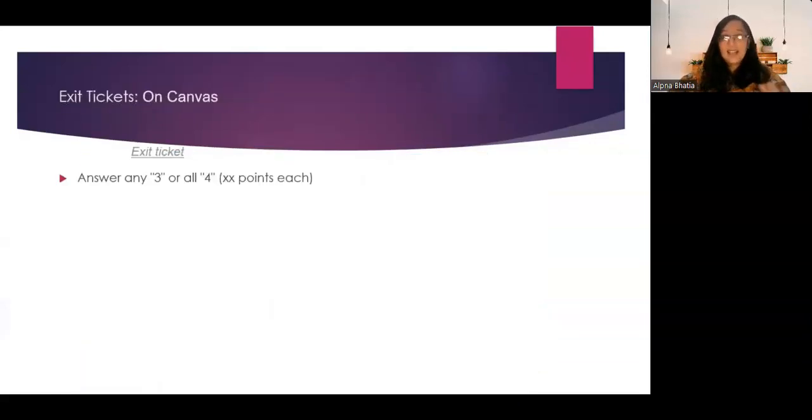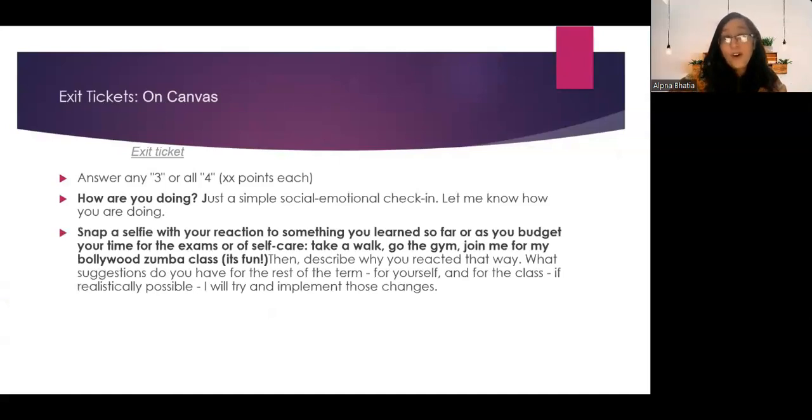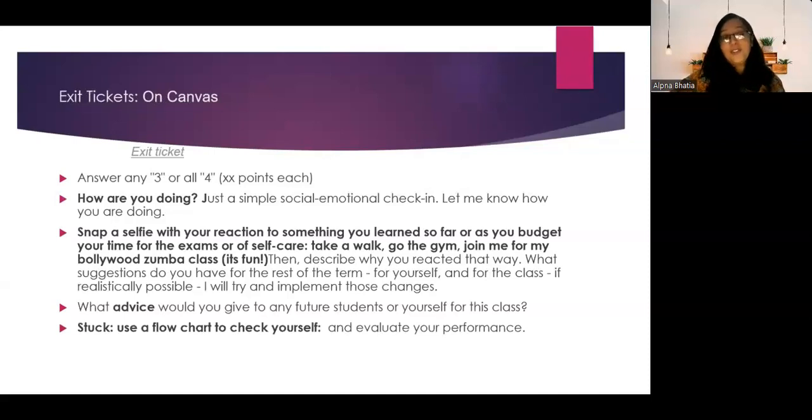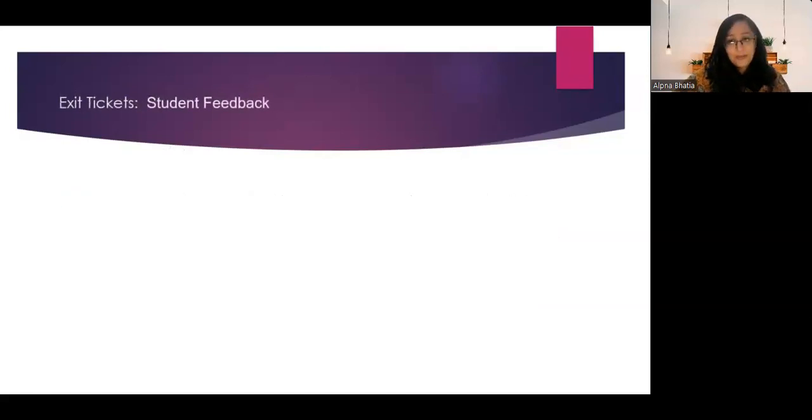Here's an example of an exit ticket that's just independent of Google workspace, but it's on Canvas. And this is what I'll put in, I'll say answer three or all four. How are you doing? Just a simple social emotional check, let me know. Snap a selfie with a reaction of something you learned so far in class. What advice would you give to any future students or yourself for this class? This sort of starts showing up more around exam time for them. If you're stuck, can you use a flow chart to check yourself and evaluate your performance? These are just snippets. I do often give them feedback on how would you create a flow chart? And that's provided to them. What resources do you have, like access to TAs or tutors that you can use right away? So I provide them that in the assignment as well, but this is sort of the example of the question that I put in there.